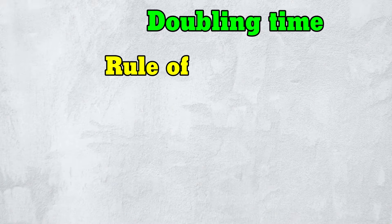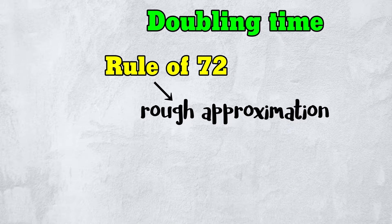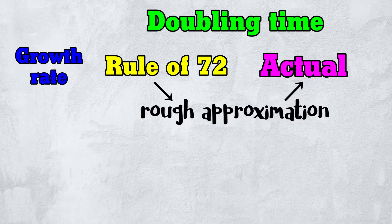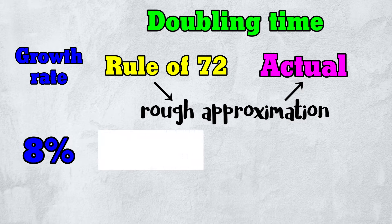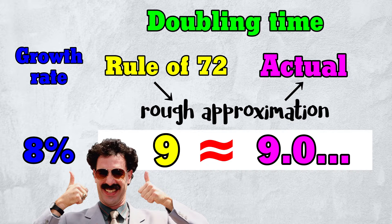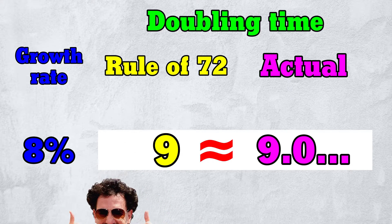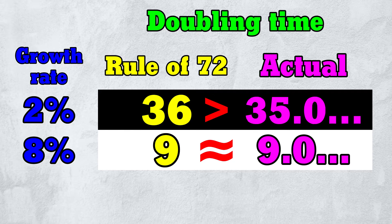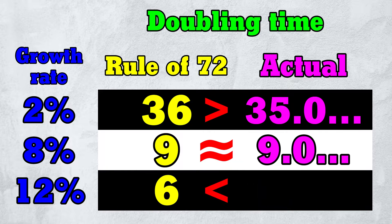The rule of 72 is a rough approximation to the actual doubling time. If the growth rate is 8%, it's very close to the actual doubling time. For lower growth rates like 2%, it overstates the actual doubling time. Conversely, for higher growth rates like 12%, it understates the actual doubling time.